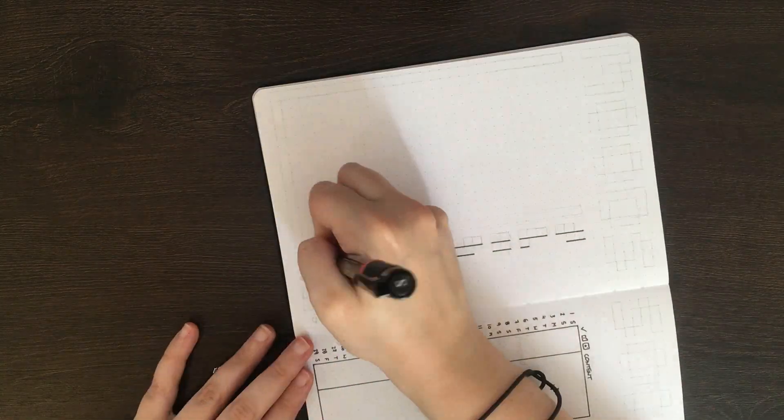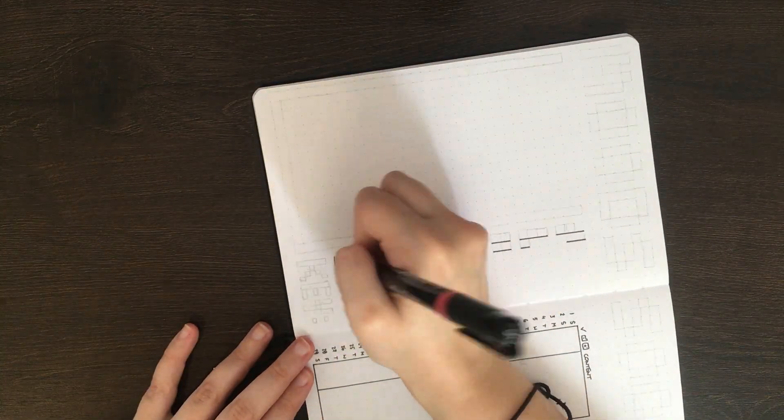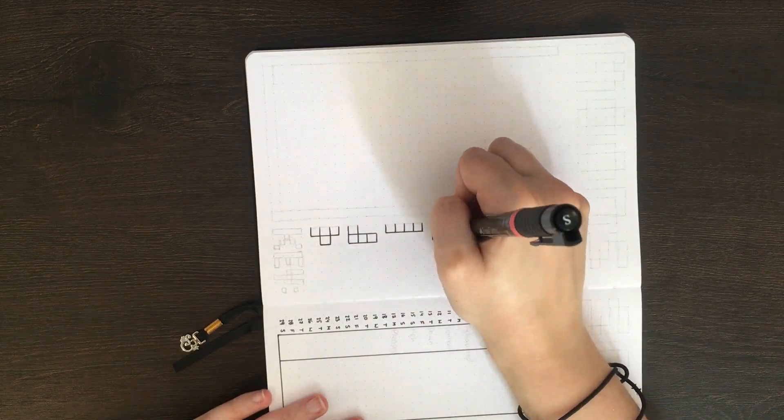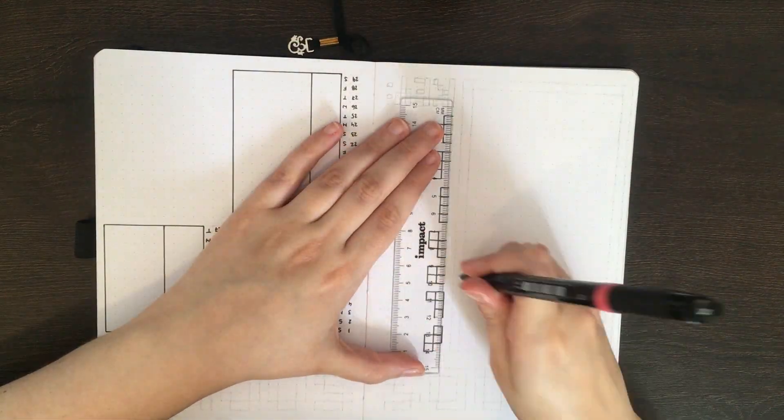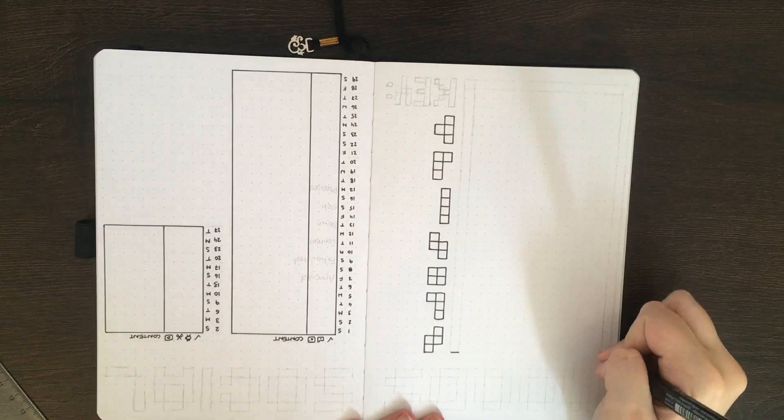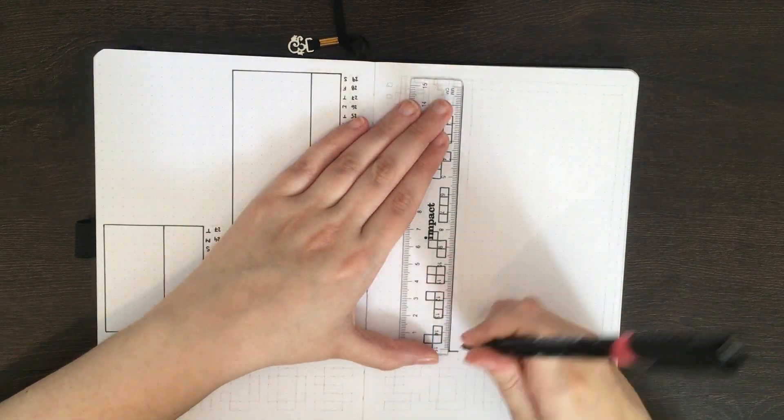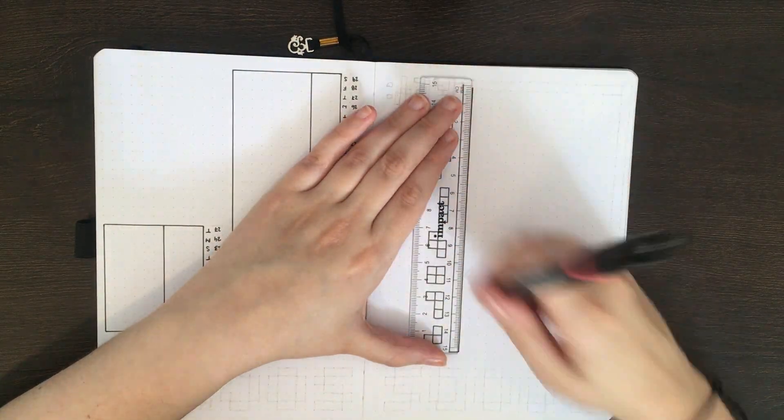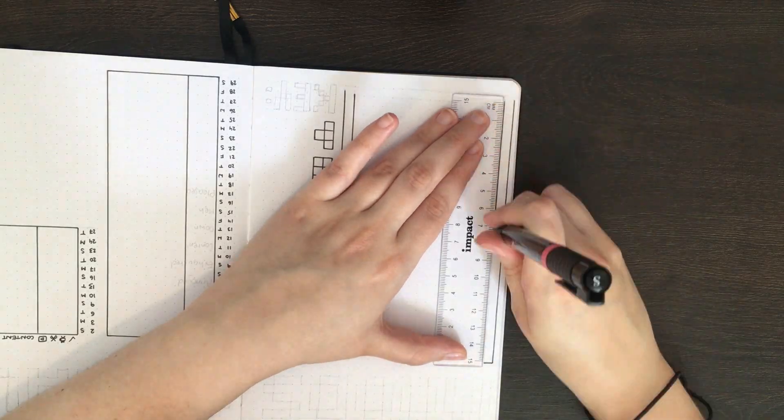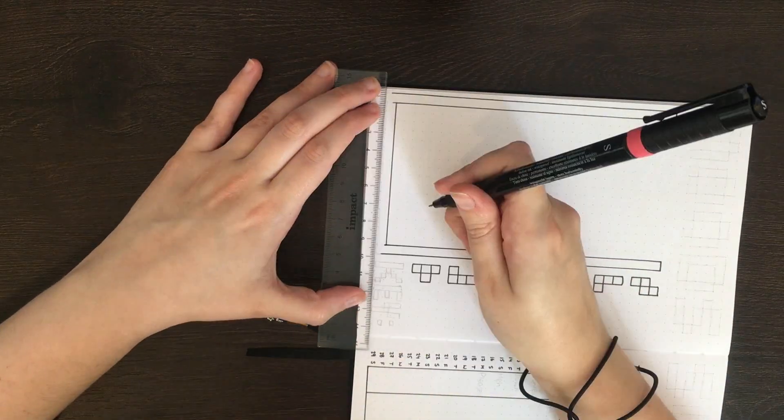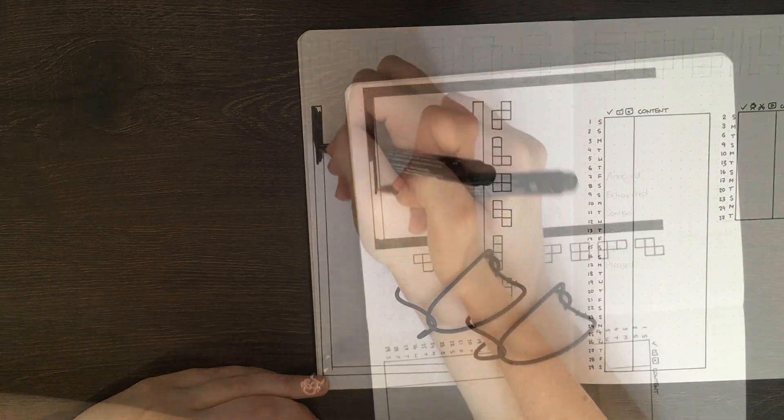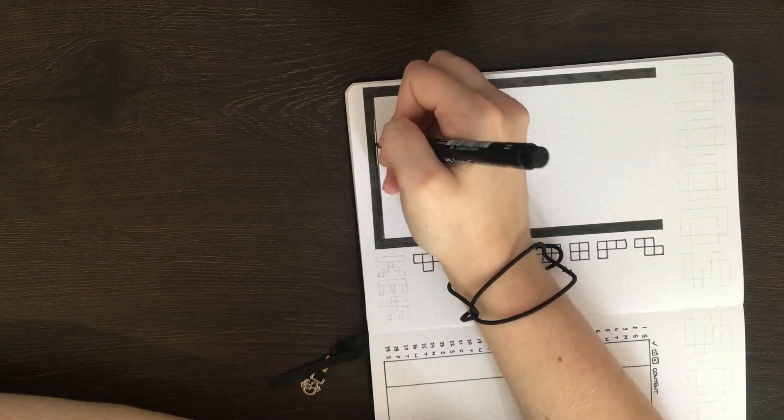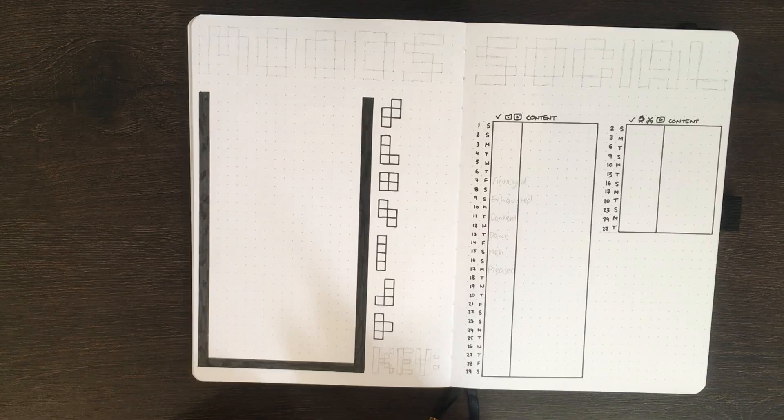Although the social media page doesn't have any specific relation to any games, my mood tracker for February is related to Tetris. Where each of the different Tetris pieces represents a different mood. So far I've managed to think of six different moods, so annoyed, exhausted, down, content, pleased and meh. I really need one more positive mood, but I'm not too sure what I'm going to do for that one yet. If you have any suggestions, I'd love to hear about them.